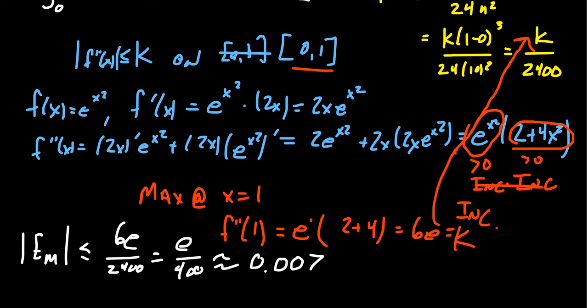So this tells us that our estimate using M10, the error is no worse than 0.007. So our estimate will be accurate to at least two decimal places because this number is smaller than 0.01. And so that kind of helps us out in this estimate here.